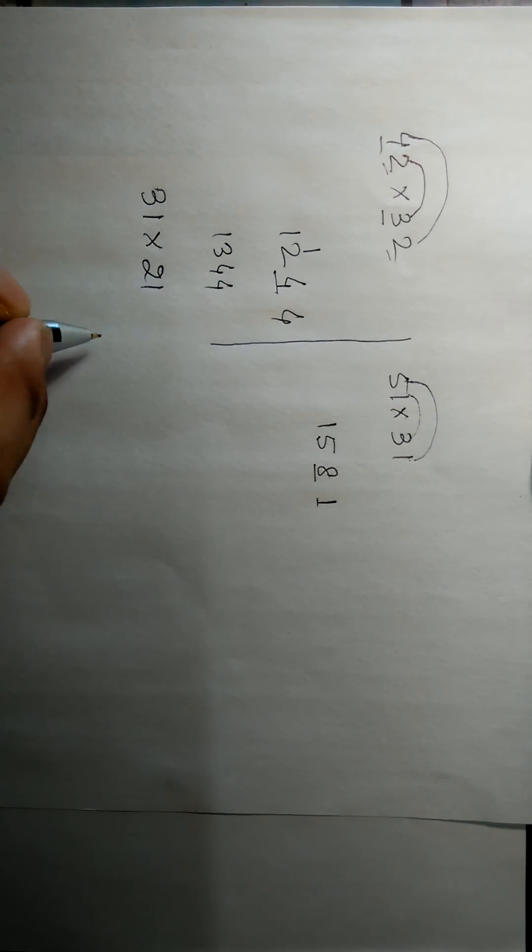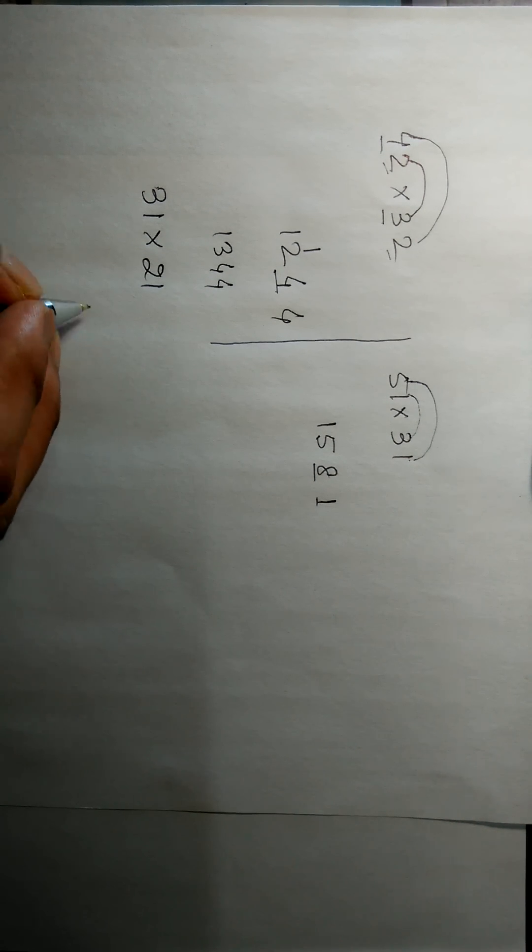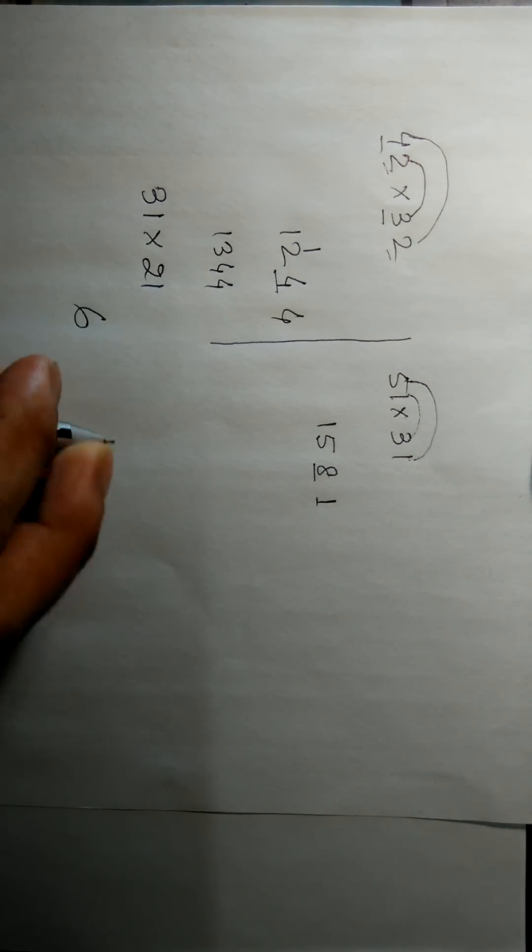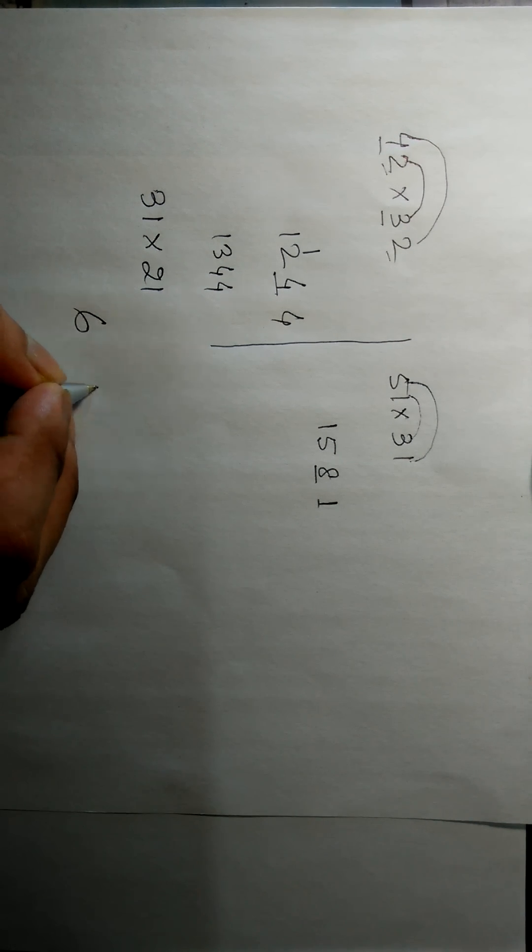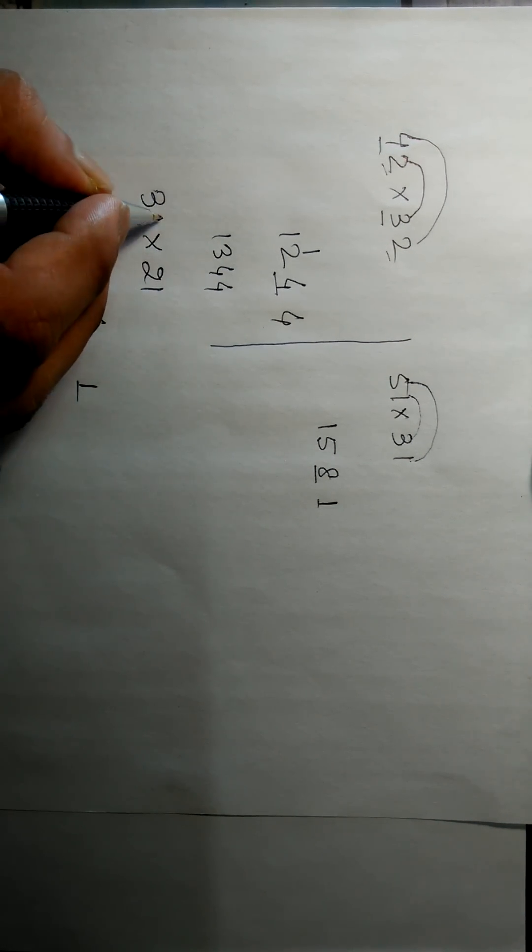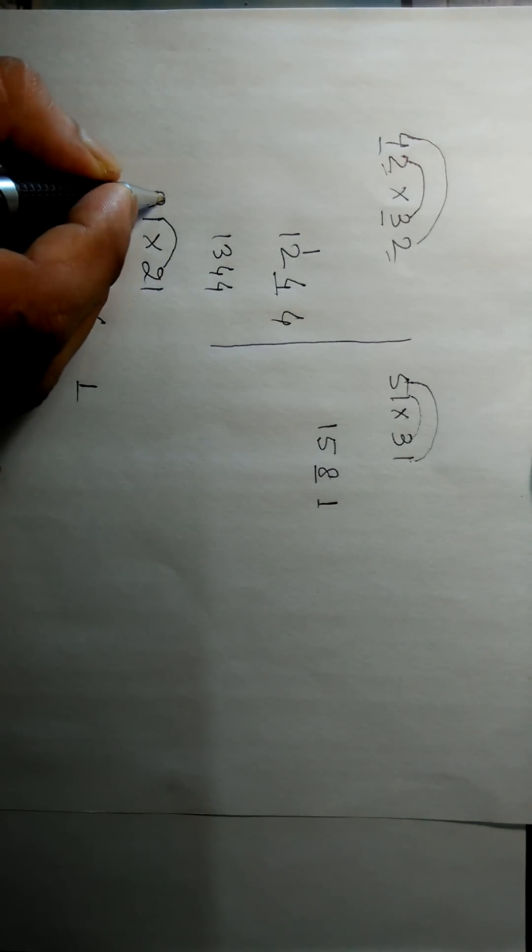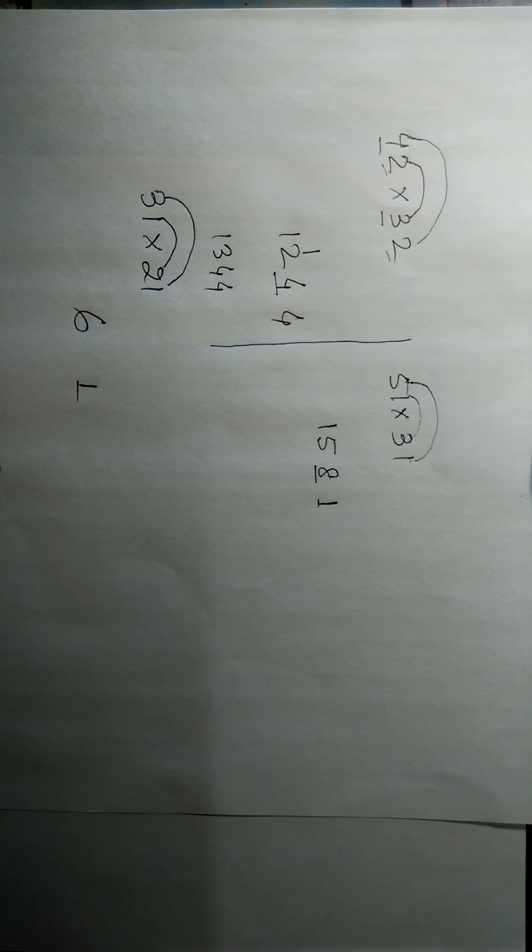First we have to multiply 3 into 2, that is 6, and then 1 into 1 is 1. And we will add 1 into 2 plus 3 and 1, that is 2 plus 3, which is 5. So this is the answer, 651.